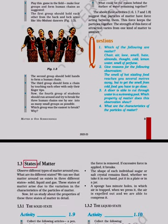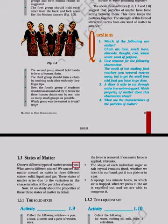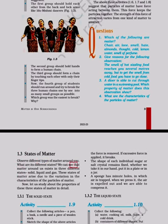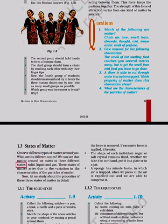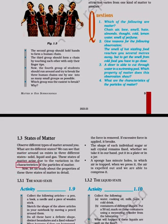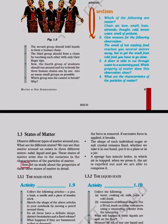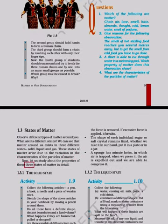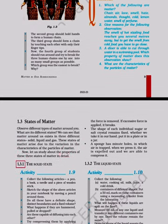1.3 States of matter. Observe different types of matter around you. What are its different states? We can see that matter around us exists in three different states: solid, liquid and gas. These states of matter arise due to the variation in the characteristics of the particles of matter.